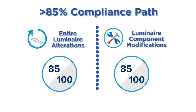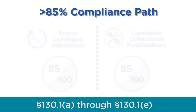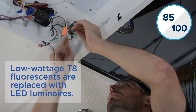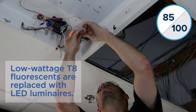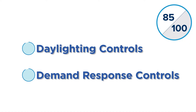The last path to compliance states that alterations with proposed lighting power of more than 85% and up to 100% of that allowed by the standards must meet all applicable control requirements in section 130.1. These requirements apply to both entire luminaire alterations and luminaire component modifications. An example of this type of project is one where dedicated LED luminaires are used to replace low-wattage T8s in a small office building. The building owner wants to reap the benefits of LED lighting, such as long life and controllability, even though the energy savings between the LED system and the current fluorescent system is only 12%. If the resultant lighting power is between 85% and 100% of the allowed lighting power, the project must include the full set of lighting control requirements, including daylighting and demand response controls, if applicable.